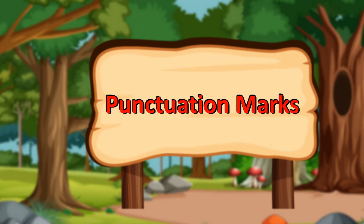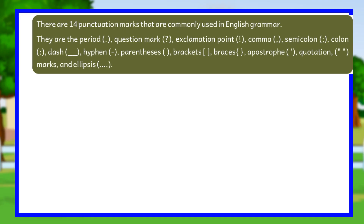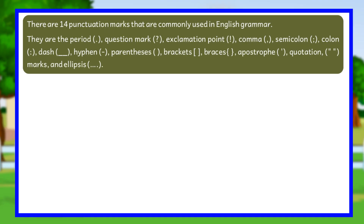There are 14 punctuation marks that are commonly used in English grammar. They are the period, question mark, exclamation point, comma, semicolon, colon, dash, hyphen, parentheses, brackets, braces, apostrophe, quotation marks, and ellipses.